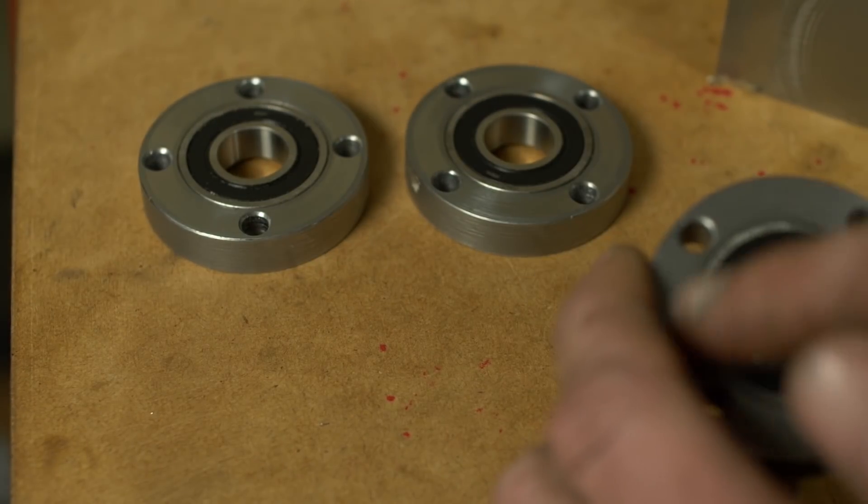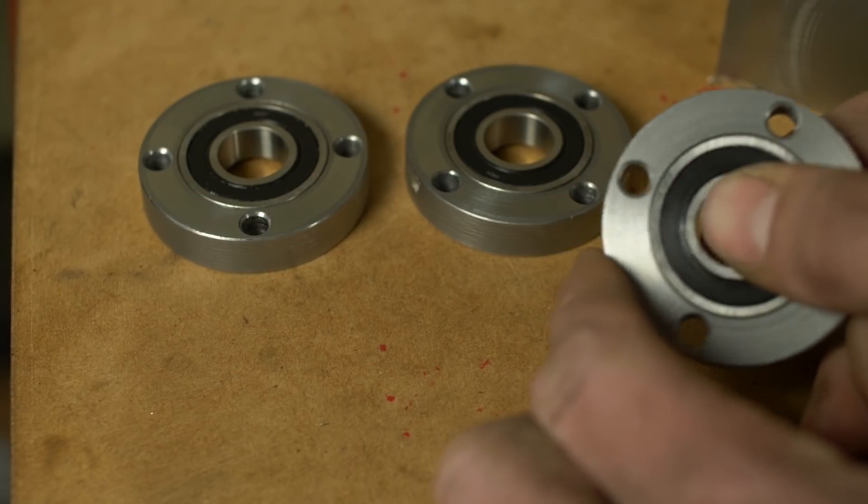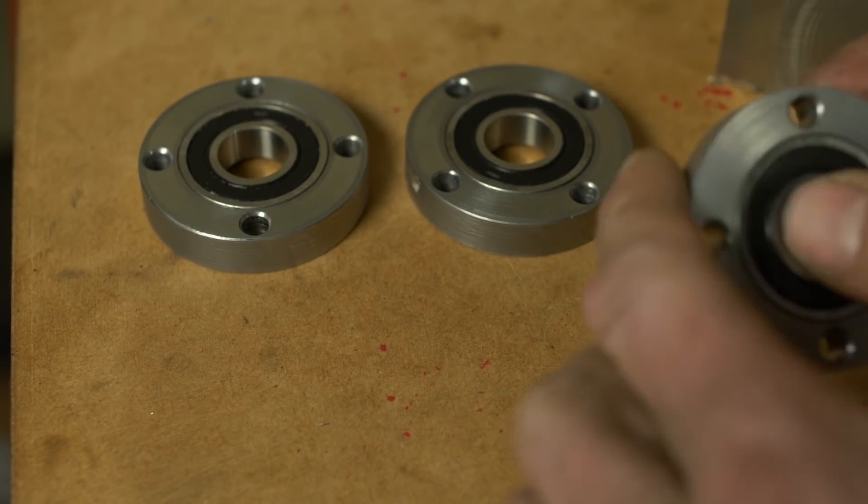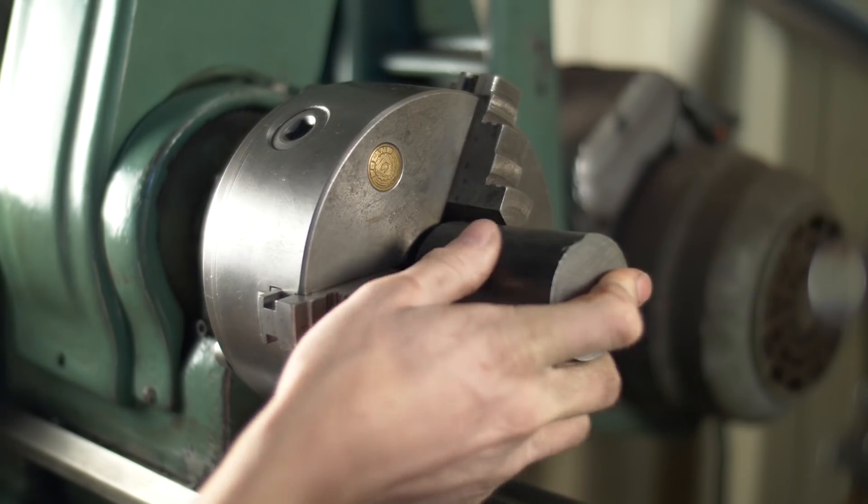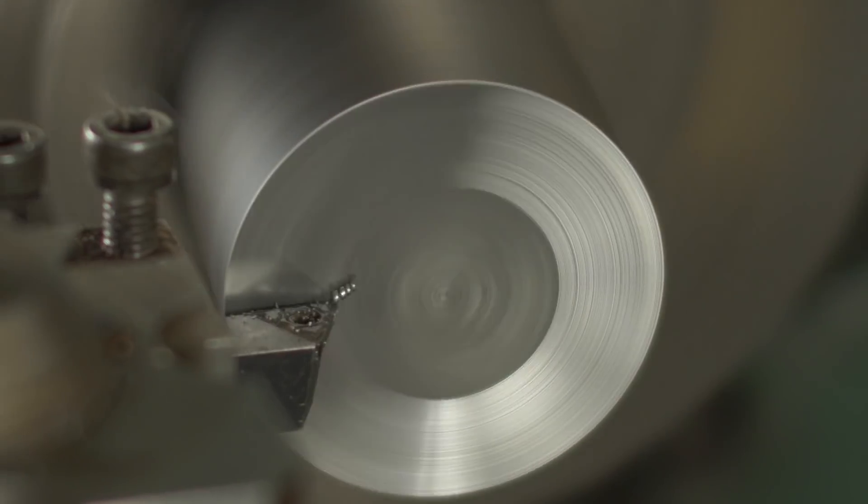So I've pushed the bearings into these, it's a very light press fit. You don't want to overdo it, otherwise you start crushing the bearing and it won't spin freely. This stock is going to be used to make a dog clutch. This will interface with two of the gears.